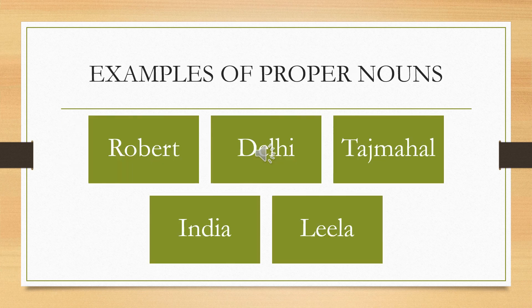A few examples of proper nouns are Robert, Delhi, Taj Mahal, India, and Leela. Children, do observe that all these words begin with a capital letter.